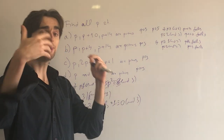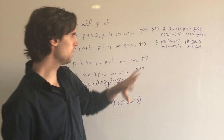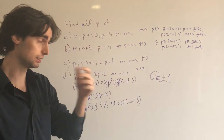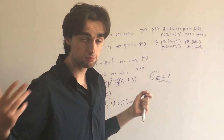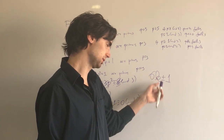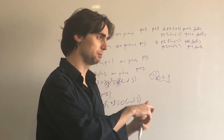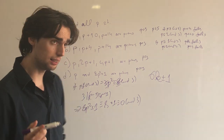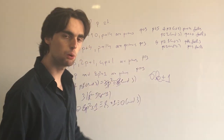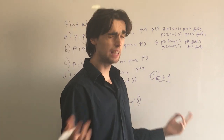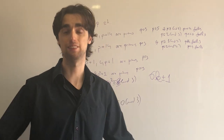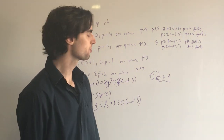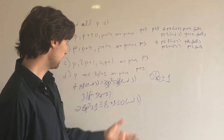The general idea here is that primes greater than or equal to 5 can always be written in the form 6K plus or minus 1, because those are the only options left. A prime can't be of the form 6K (divisible by 6), 6K plus 2 (divisible by 2), 6K plus 3 (divisible by 3), or 6K plus 4 (divisible by 2). Note that not every number of this form is prime — for example, 25 = 4 times 6 plus 1 is not prime.